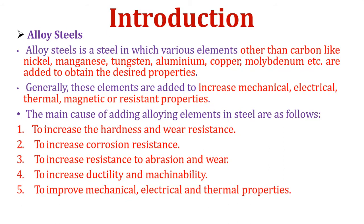Basic introduction about the alloy steel. Alloy steel — initially we have to know what is alloy. Alloy is the mixture of two or more metals, or combination of two or more metals, that is called as the alloy. In this unit we have to study the alloy steel. Alloy steel is the steel in which various elements other than carbon — like nickel, magnesium, tungsten, aluminium, copper, molybdenum, etc. — are added to obtain the desired properties.